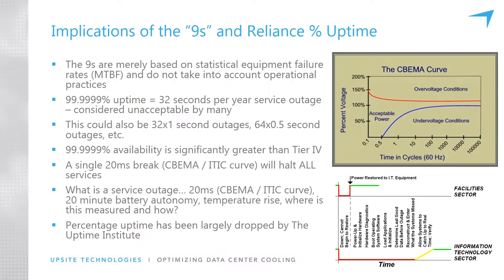If you think about six nines availability — that's 99.9999% uptime — that still allows for 32 seconds a year of service outage. That could be a single 32-second period, or 32 one-second outages, or 64 half-second outages, each of which is actually going to take out the entire IT load if that outage is on the electrical side.